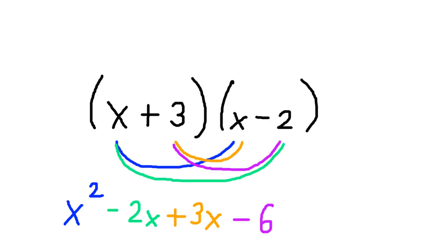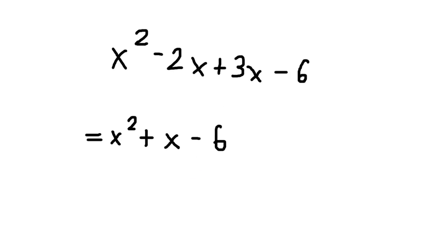As an example, x plus 3 times x minus 2 is x times x, which is x squared, plus x times negative 2, which is negative 2x, plus 3 times x, which is 3x, plus 3 times negative 2, which is negative 6. When simplified,